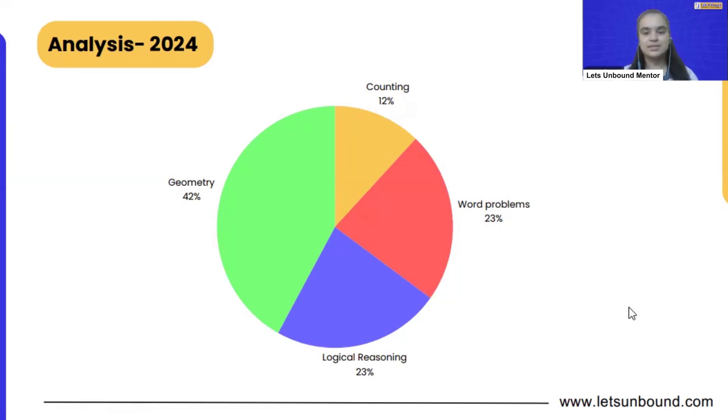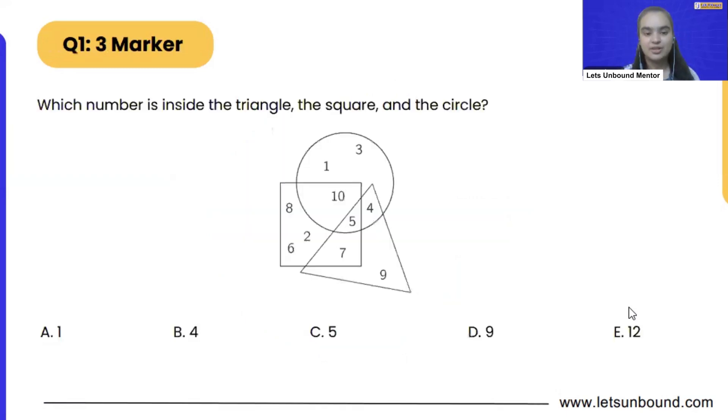Now in word problems it can be any operation, right? So keep practicing and let's see our very first problem. That is which number is inside the triangle, the square and the circle.